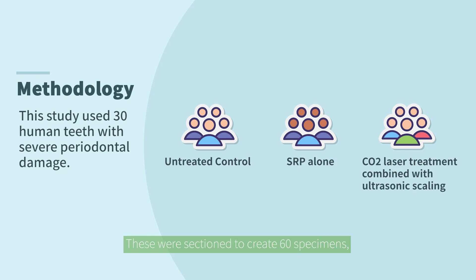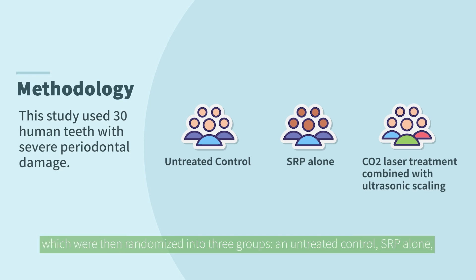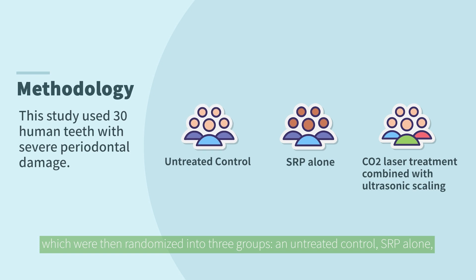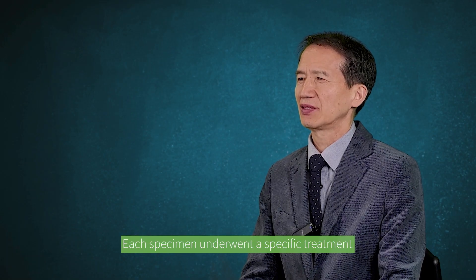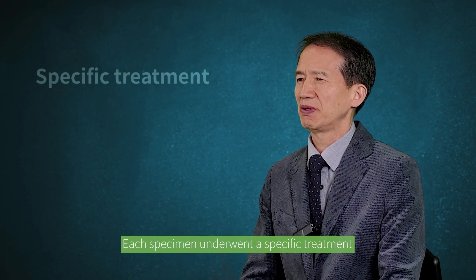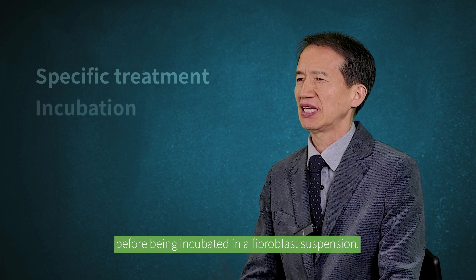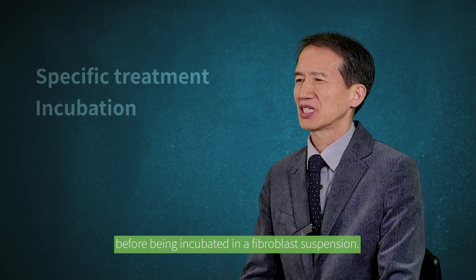The study involved 30 single-rooted human teeth extracted due to severe periodontal damage. These were sectioned to create 60 specimens, which were then randomized into three groups: an untreated control, SRP alone, and CO2 laser treatment combined with ultrasonic scaling. Each specimen underwent a specific treatment before being incubated in fibroblast suspension.